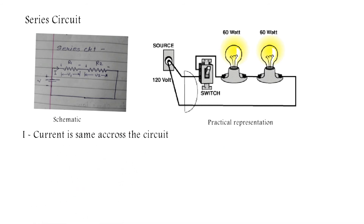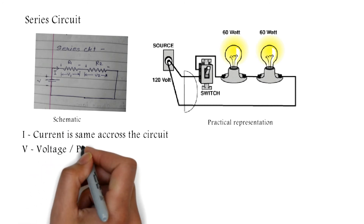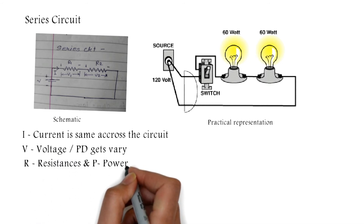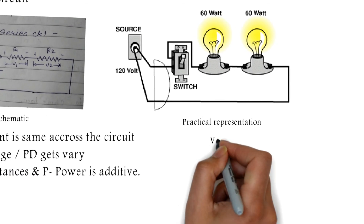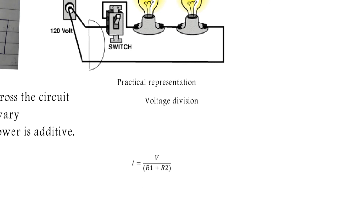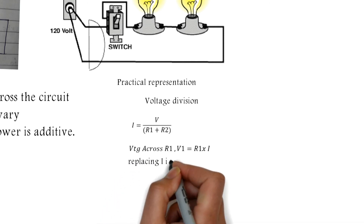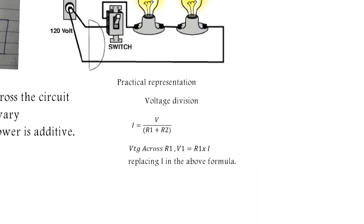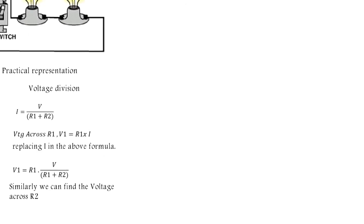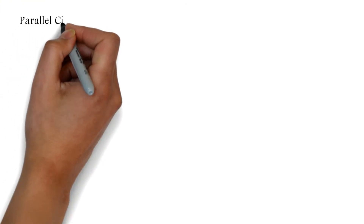In a series circuit, the current I is the same across the circuit. The voltage V varies, resistance R and power P are additive. The voltage division rule applies: I equals V divided by (R1 + R2), and the voltage across R1 is V1 equals R1 times I. Substituting I gives a useful equation to find the voltage across R1 and R2.